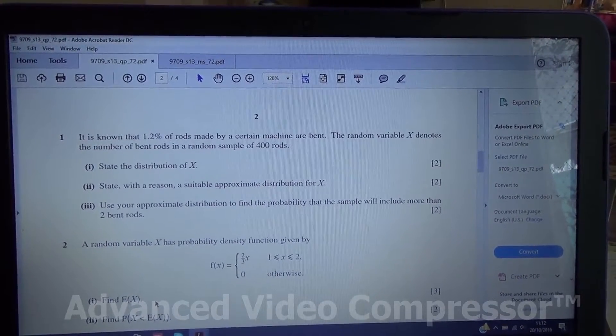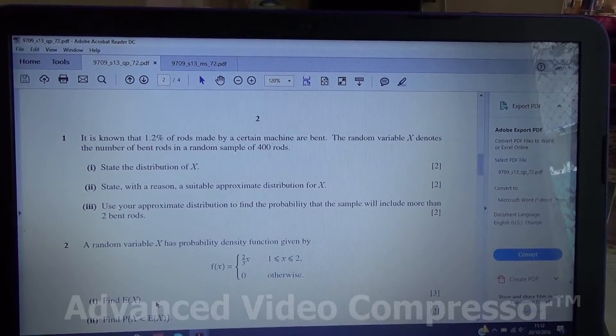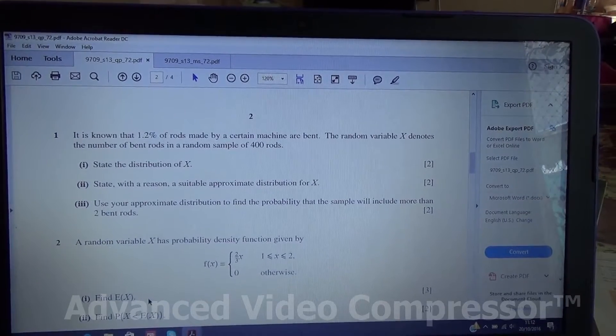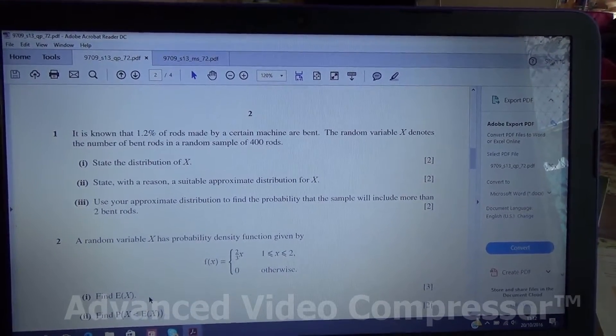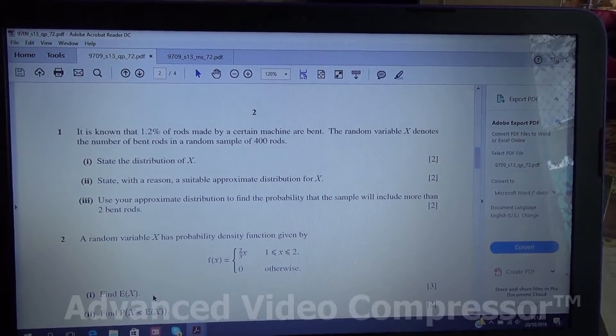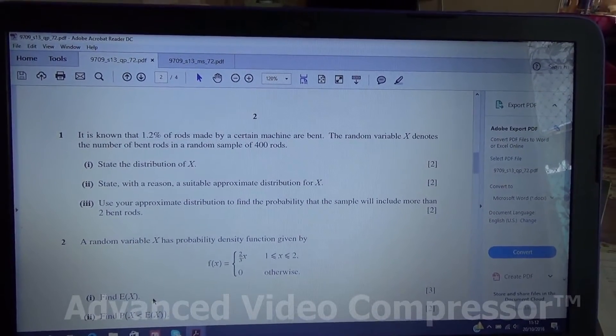State the distribution of x for the first part and second part. State with the reason a suitable approximation for x. And for the third part, use your approximate distribution to find the probability that the sample will include more than 2 bent rods.